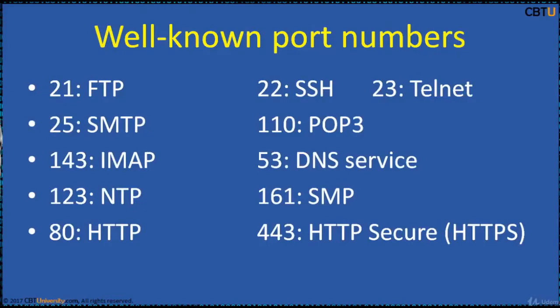A port is an endpoint of communication in an operating system. A port number is a 16-bit unsigned integer, ranging from 0 to 65535. Specific port numbers are often used to identify specific services. There are 1024 well-known port numbers reserved by convention to identify specific service types on a host. Well-known port numbers include FTP port 21, SMTP port 25, and HTTP.